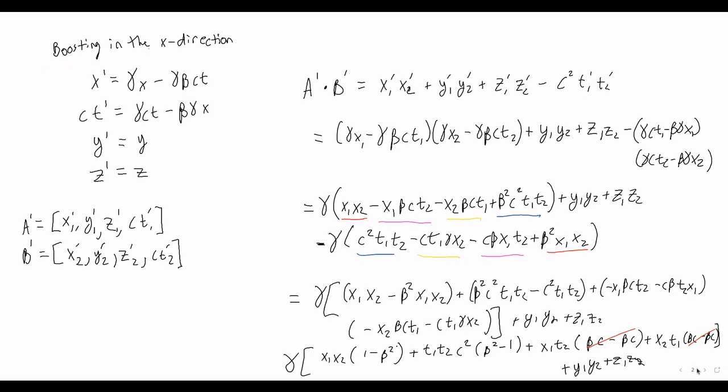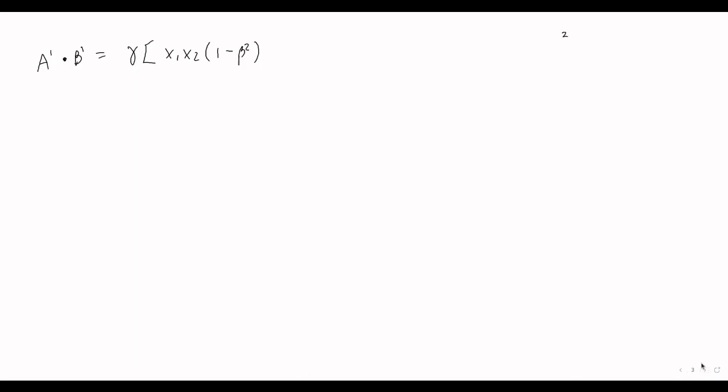And so when I rewrite this on the next page, so we started this process off at A prime times B prime, and now we've gotten it all the way down to something that looks like this: x1 x2 times 1 minus beta squared plus t1 t2 c squared times beta squared minus 1, and then we have plus y1 y2 plus z1 z2.